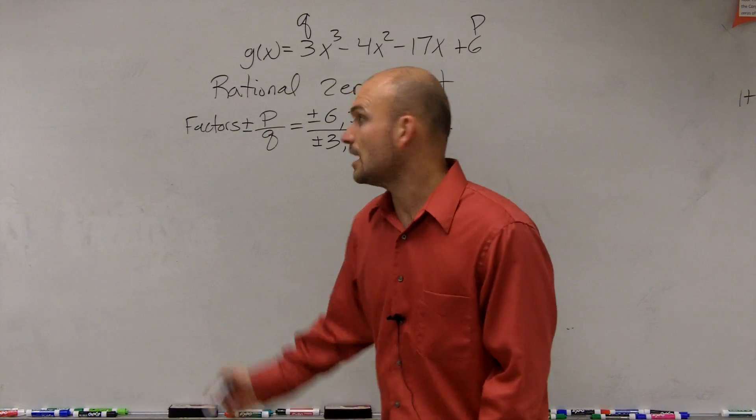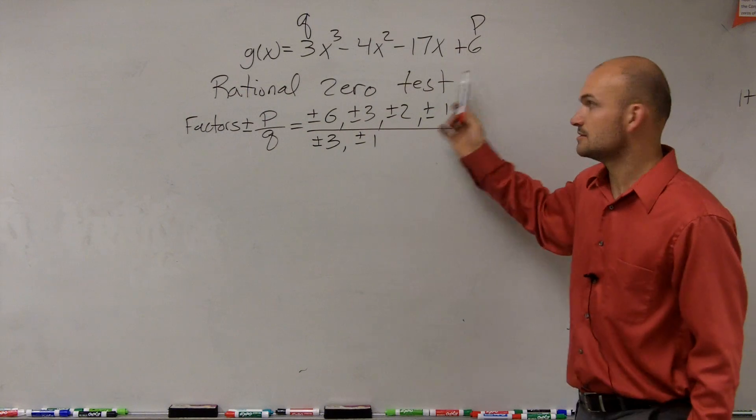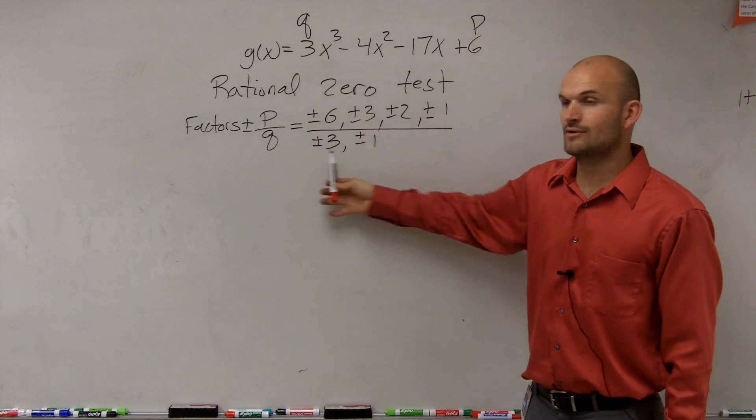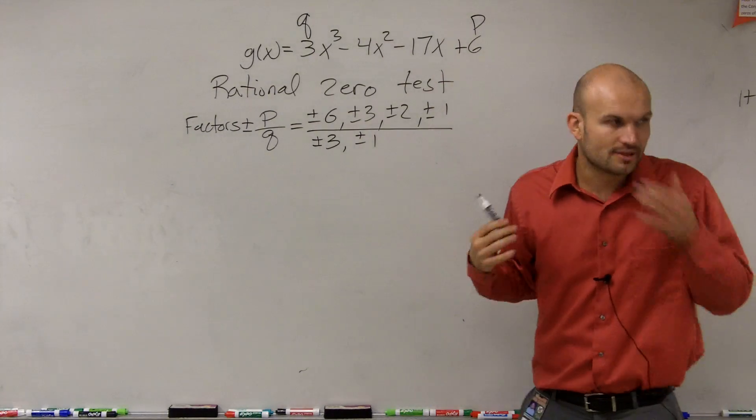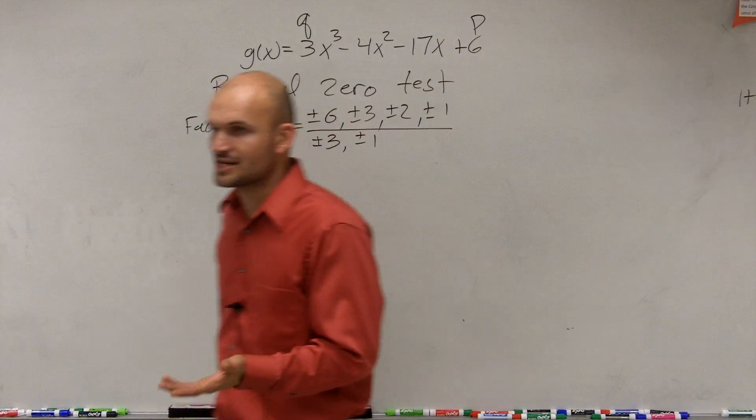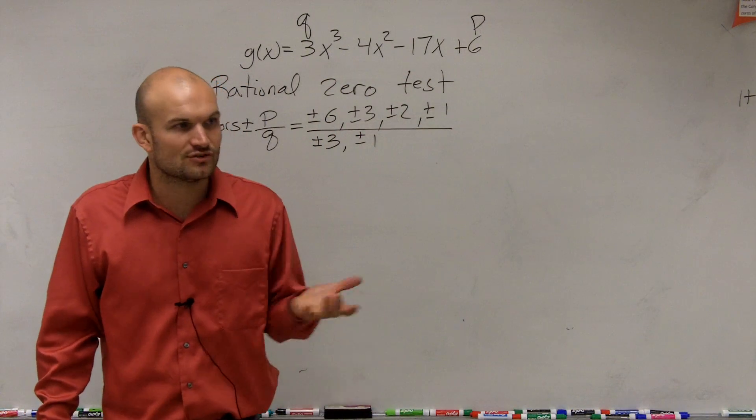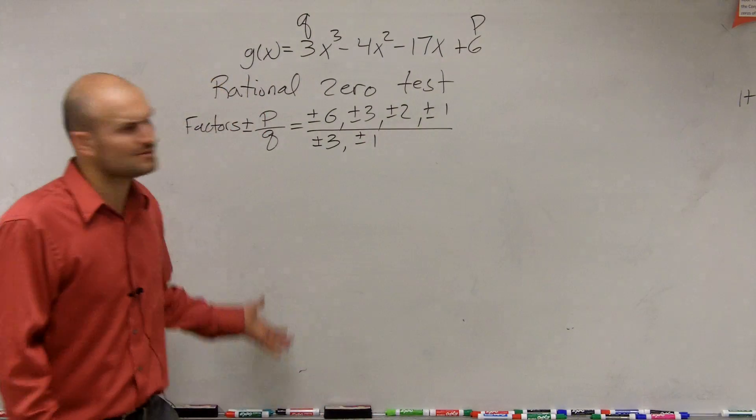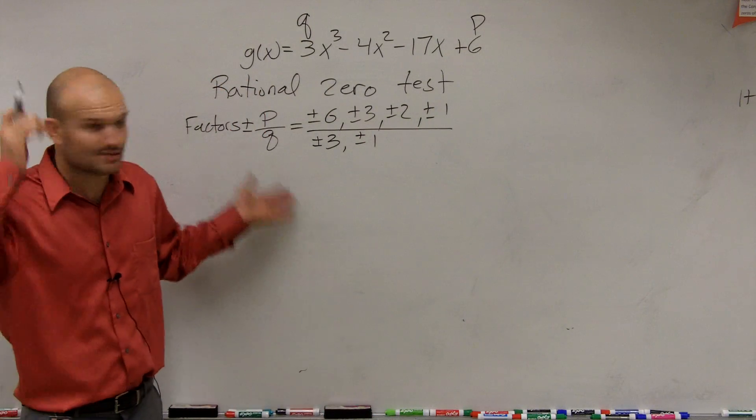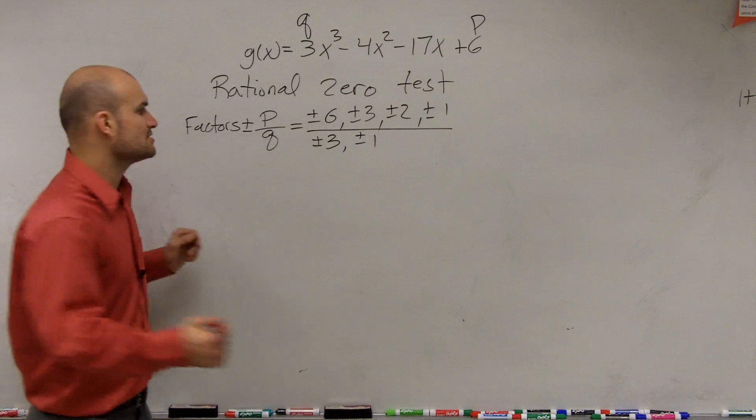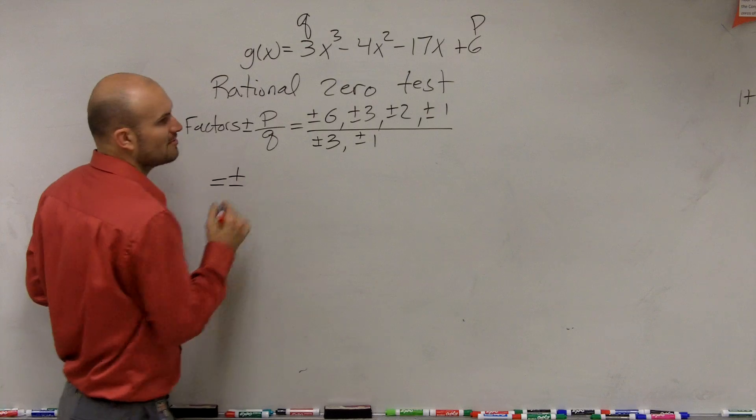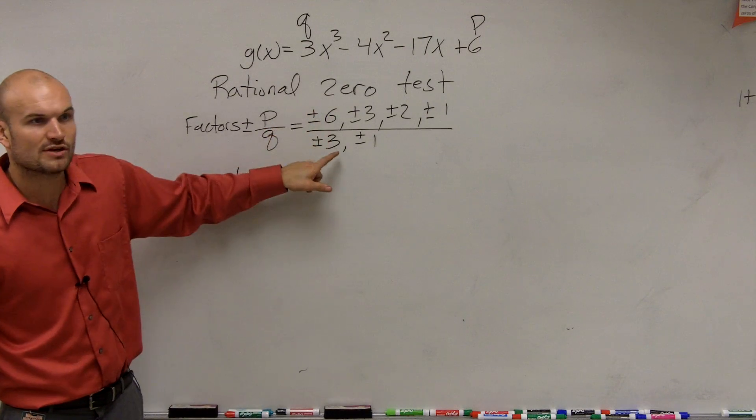So that means I took the factors of 6 and wrote all of them up top, and I took the factors of 3 and I wrote them in their denominator. And what the rational zero test tells us, if there is a rational zero, it is going to be one of these numbers. But you might say, I don't see where you're getting your numbers because it just looks like you wrote a whole bunch of stuff over a whole bunch of other stuff. So let's go and actually write them out.